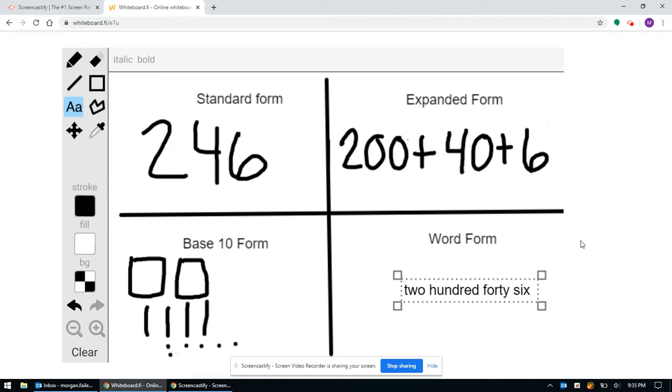So here you see four different ways to represent 246. All four of these have the same value. They are the same number, just shown different ways.